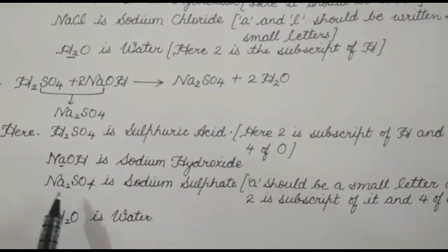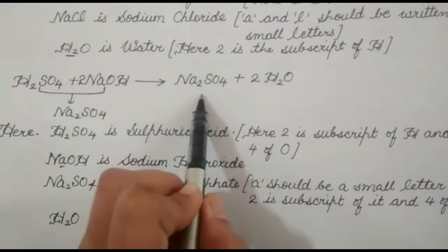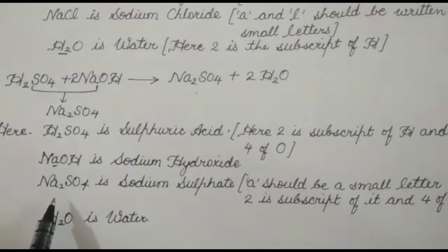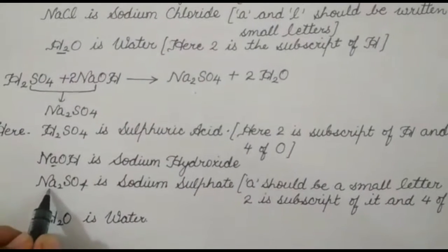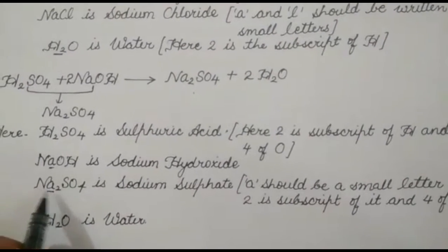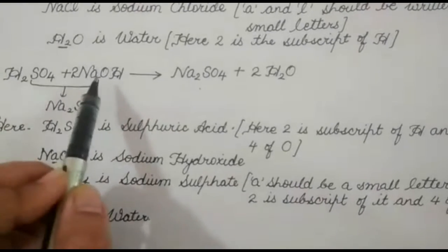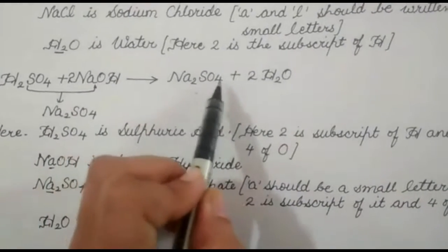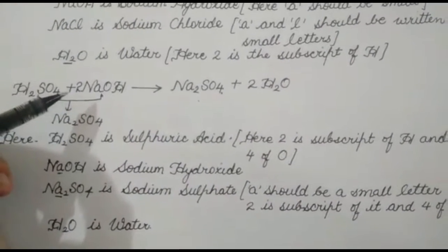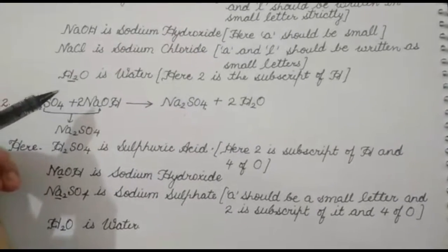The salt formed is sodium sulfate. When writing the chemical formula of sodium sulfate, A should be a small letter and all other letters should be capital. So whenever sulfuric acid reacts with sodium hydroxide, sodium sulfate is formed. Both of these are neutralization reactions.